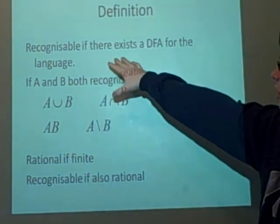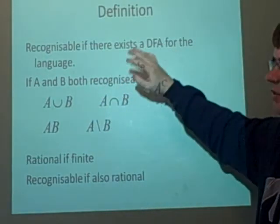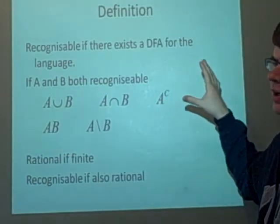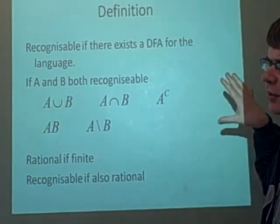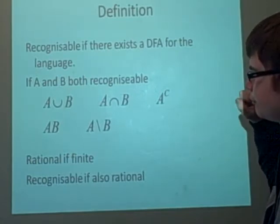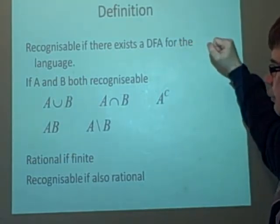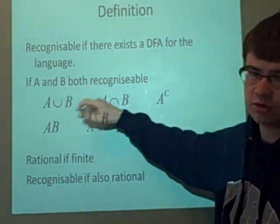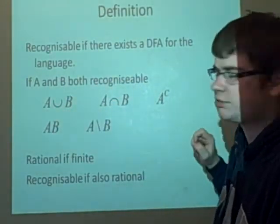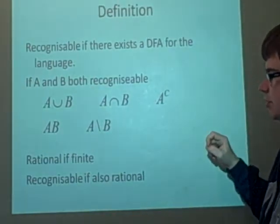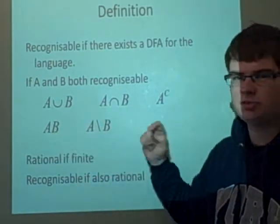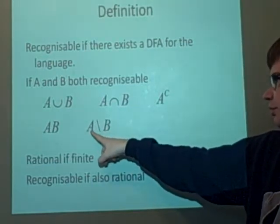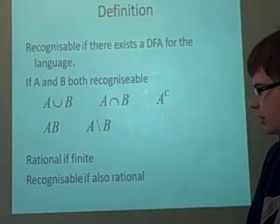As I've just said, recognizable is if there exists a DFA for the language. It's usually written L equals L(A), where A is a DFA. One thing we can say about recognizable languages is that if we have two of them, A and B, then the union is recognizable, the intersection is recognizable, the complement will be recognizable, the sum is recognizable, and this one as well, which I haven't really seen in practice, one not including the other is recognizable.